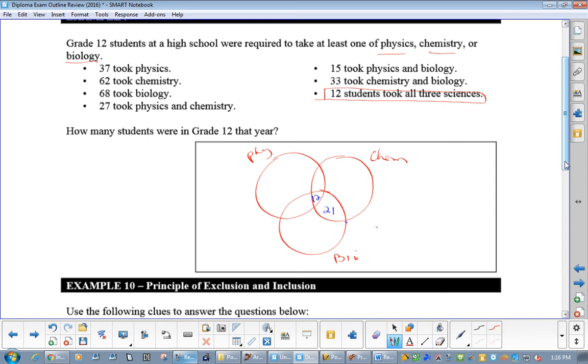Now, 33 took Chem and Bio. So, this whole thing has to add to 33. So, that's 21. 15 took Physics and Bio. So, this would be three there. 27 took Physics and Chem. So, we've got 12 already. That's 15.